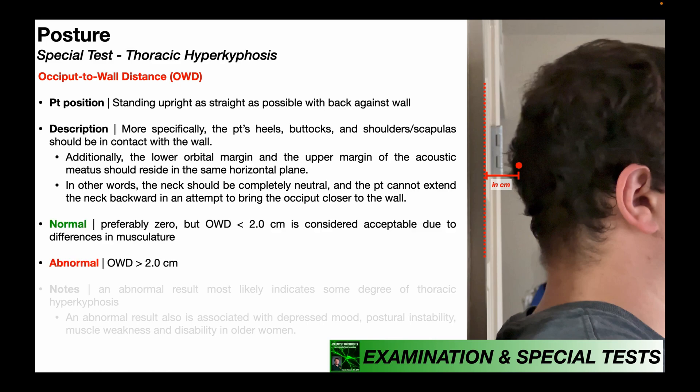The occiput to wall distance preferably should be zero, but a distance less than two centimeters is considered acceptable due to differences in musculature. For example, if the patient has a significant amount of posterior musculature around the buttocks or the scapulas, that's going to push them farther from the wall. However, an occiput to wall distance greater than two centimeters is considered abnormal and would probably indicate some degree of thoracic hyperkyphosis.